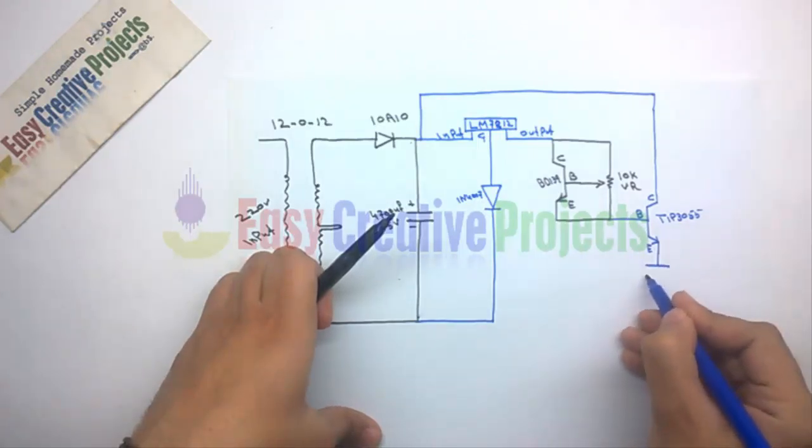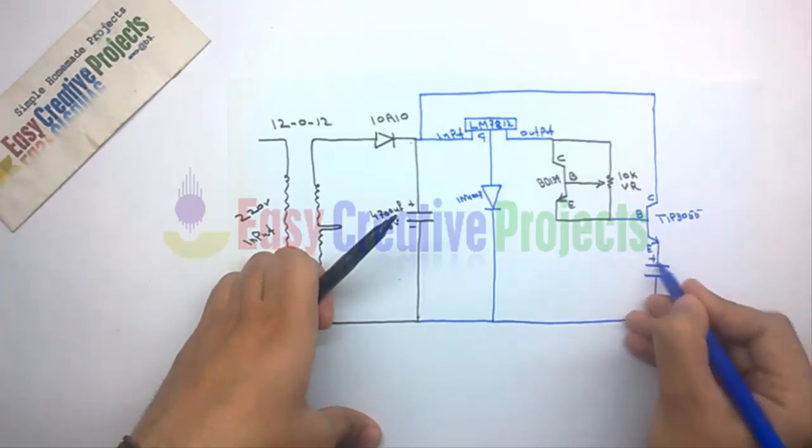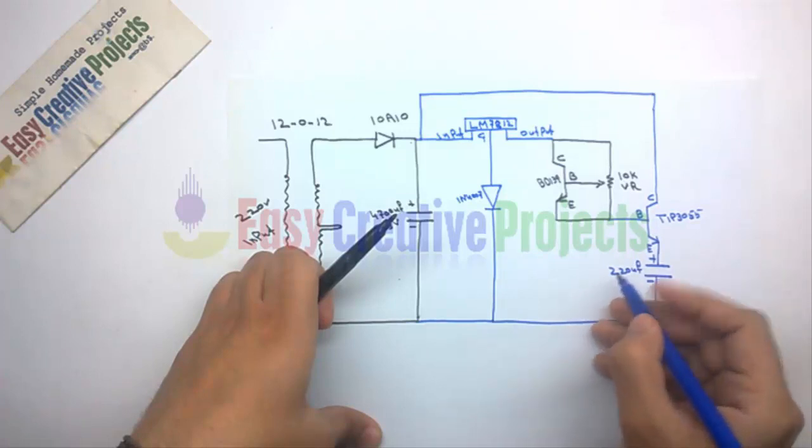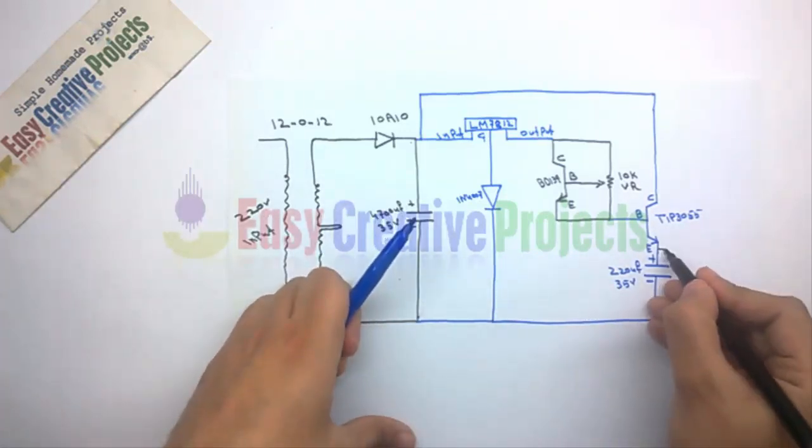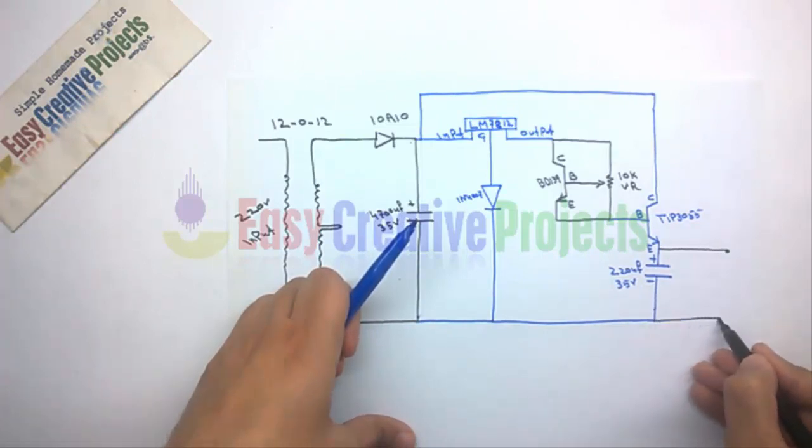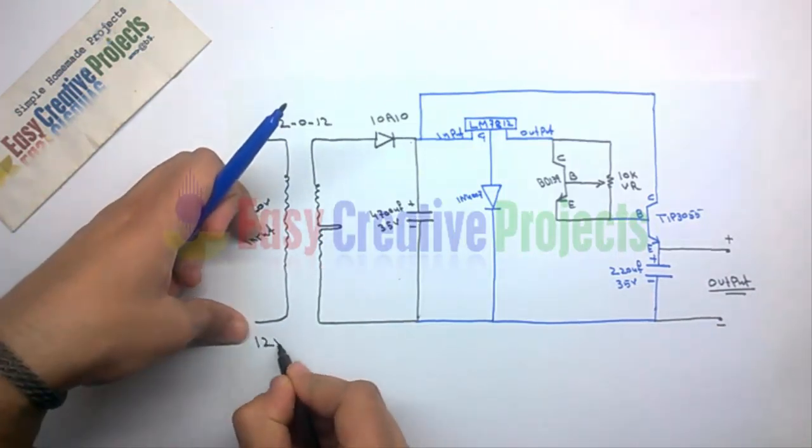Now positive side of 220 microfarad capacitor connect with emitter pin of TIP3055 transistor, and negative side of capacitor connect with ground wire. And finally TIP3055 emitter pin use for positive output and ground wire use for negative output.